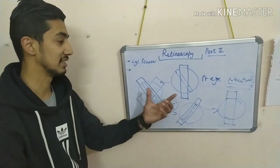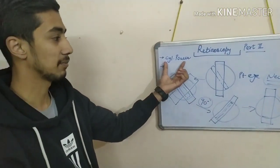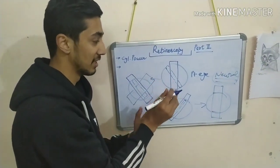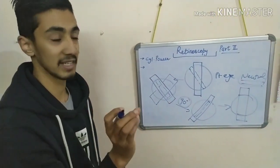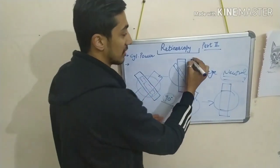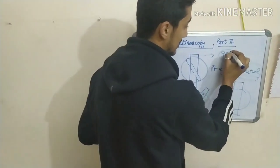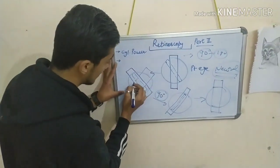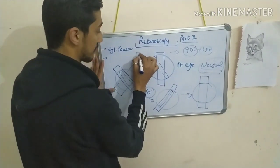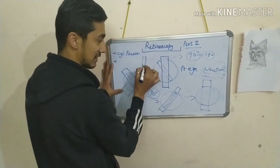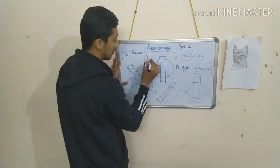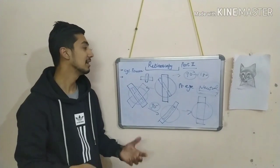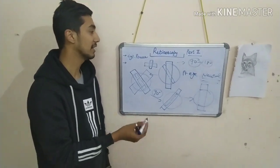The most important thing in retinoscopy for cylindrical power is that you have to find the exact meridian — the exact fine meridian where the reflex is finest — so that you get the exact angle. The angle could be anything: 90, 180, or any value. For example, if you find the slit finest at 90 degrees, neutralize at the 90-degree meridian, then move 90 degrees apart to the 180-degree meridian. Neutralize both meridians and you will get the cylindrical power.